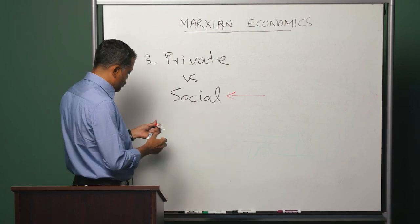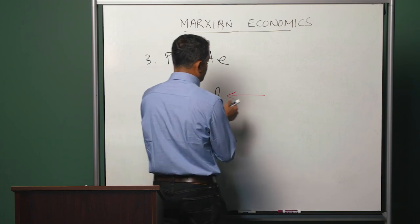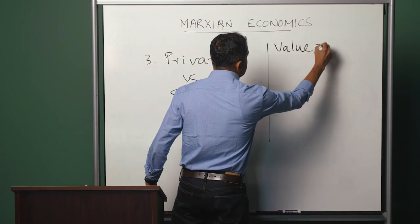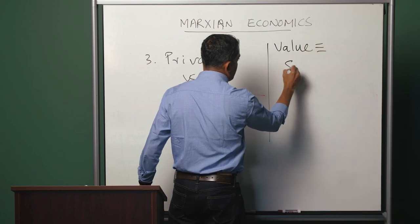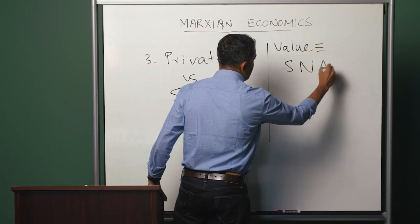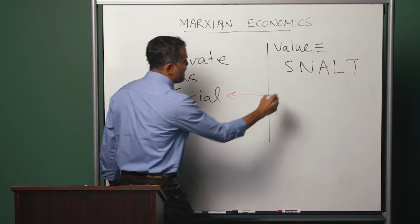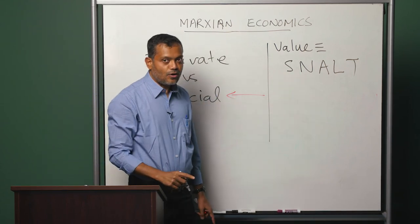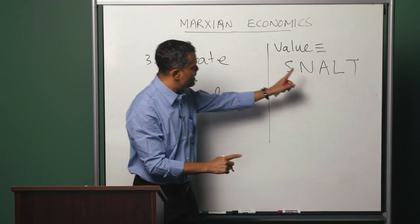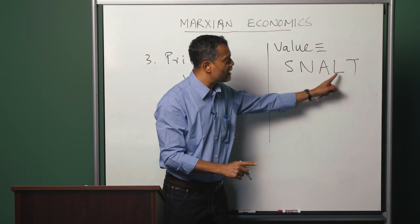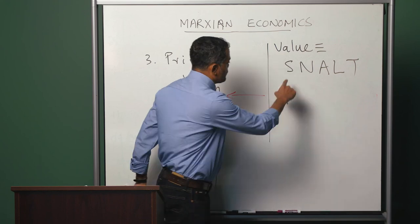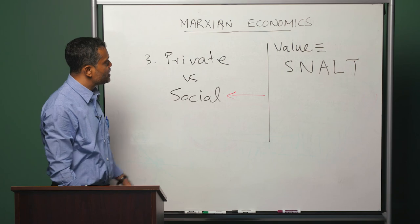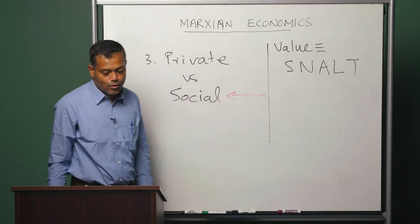Now we are ready to summarize our discussion. Value is created by SNALT — Socially Necessary Abstract Labor Time. The socially necessary abstract labor time that is needed to produce a commodity is the value of that commodity.